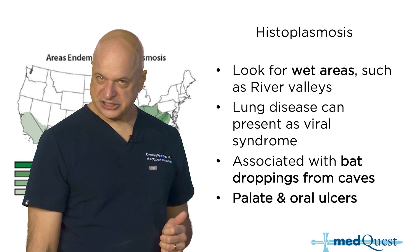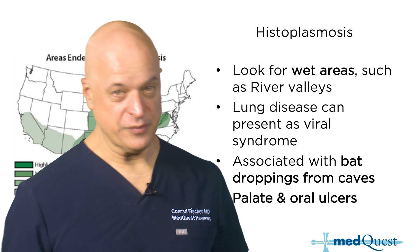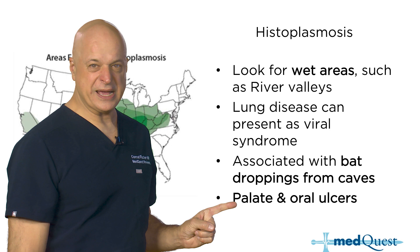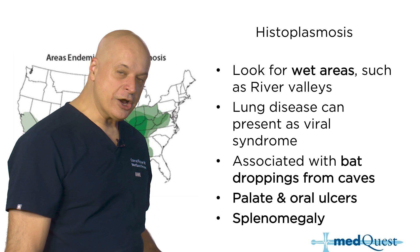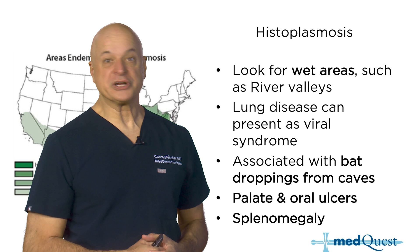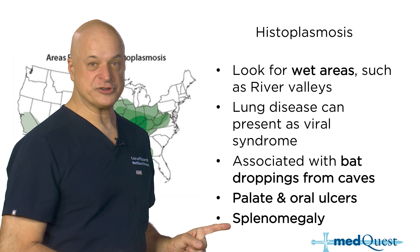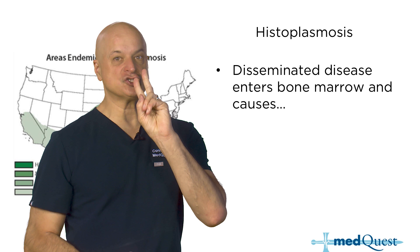Coccidioidomycosis causes joint pain and erythema nodosum — that's desert rheumatism. Histo doesn't cause joint pain and erythema nodosum; histo causes a big spleen and invades your cell production — that's why it can go into the marrow and cause splenomegaly. Histo is in wet areas; cocci is in dry areas. And cryptococcosis, of course, is in pigeon droppings.